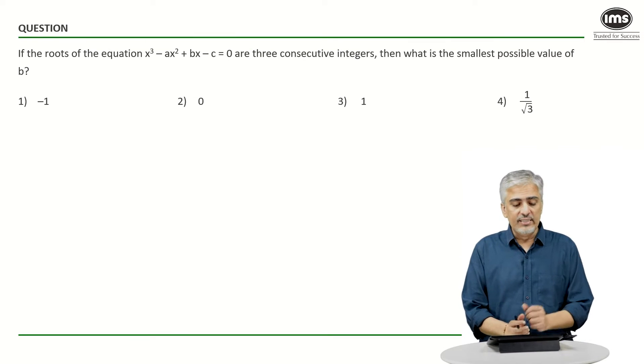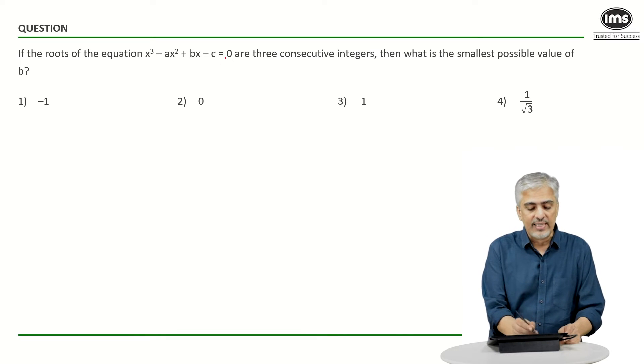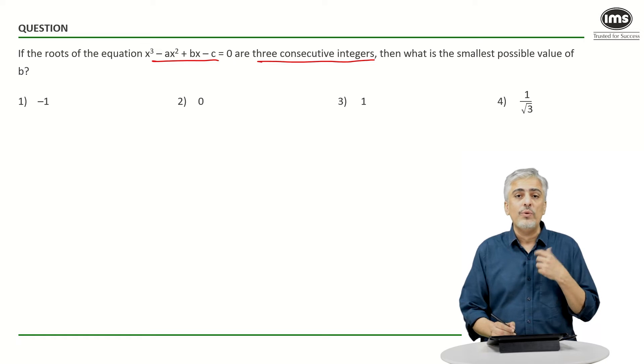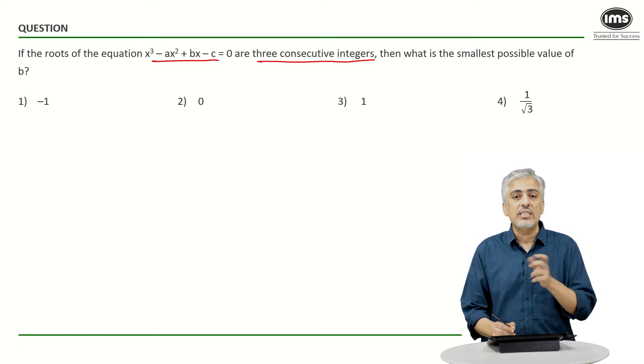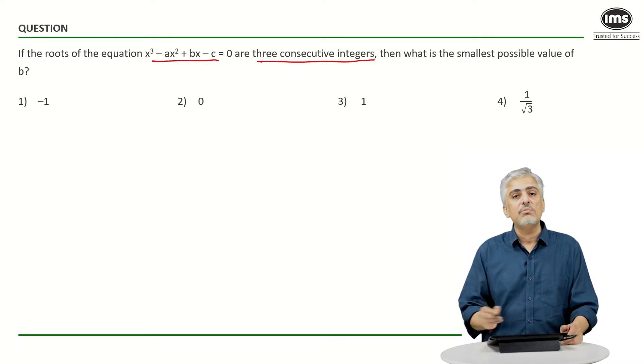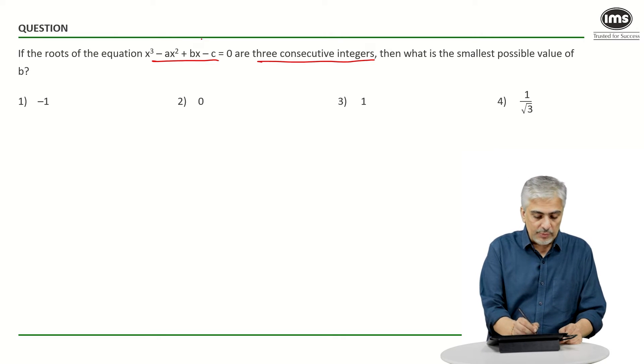Now the question says: if the roots of the equation x³ - ax² + bx - c are three consecutive integers, then what is the smallest possible value of b? Remember the word integers - whenever they tell you integers, you should always think that means I can take positive as well as negative, I can take zero also. We want to know the smallest possible value of b.